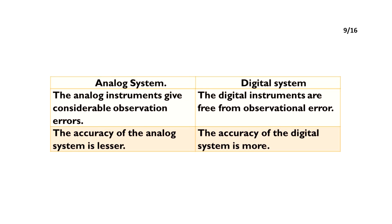The analog instruments give considerable observation errors. The digital instruments are free from observational error. The accuracy of the analog system is lesser. The accuracy of the digital system is more.